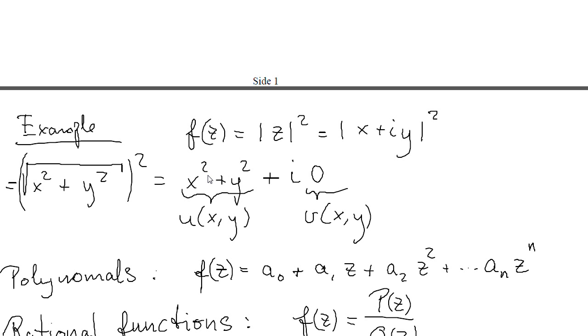We note that this value is a real value, it has no imaginary value. This means that the imaginary value is zero. In this case, u, which is the real part of the function, is x squared plus y squared, and the imaginary part is zero.